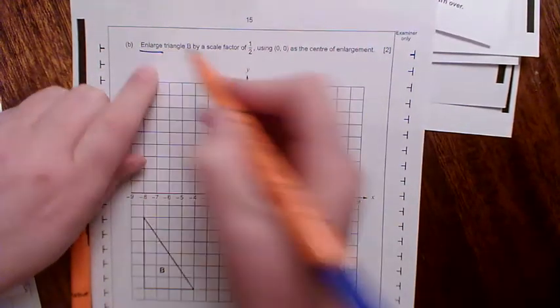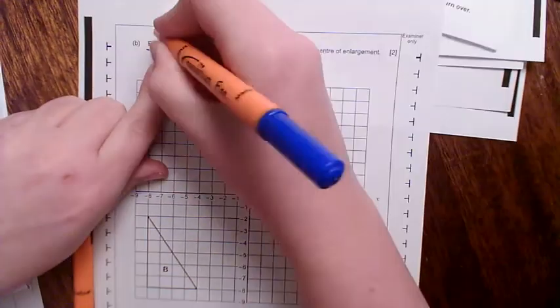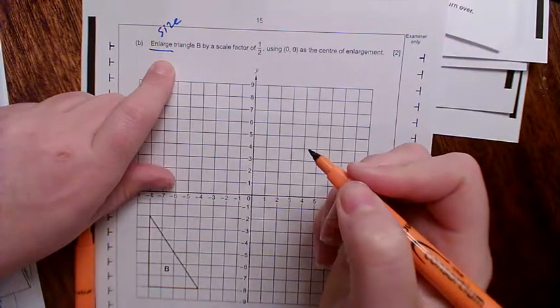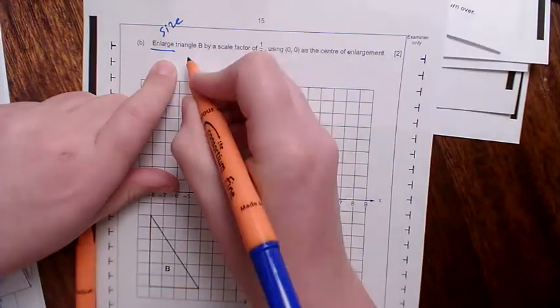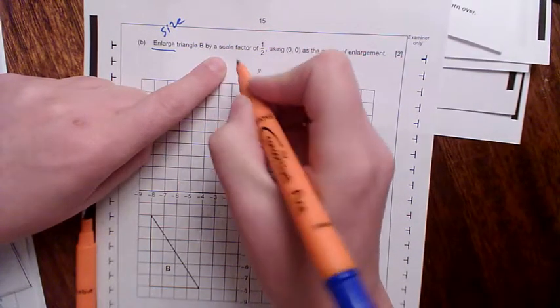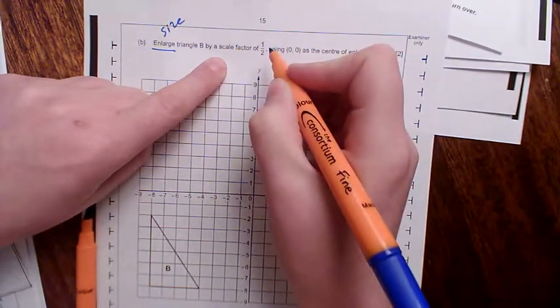Enlarge triangle B by a scale factor of a half using 0,0 as the centre of enlargement. Now, whilst it's called an enlargement, that just means that the size is going to change. It doesn't necessarily mean it gets bigger. It would get bigger if the scale factor was bigger than 1, and then you would just times it by whatever that number was. However,